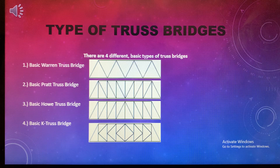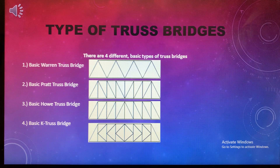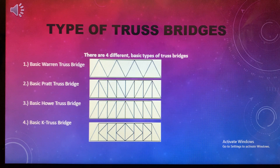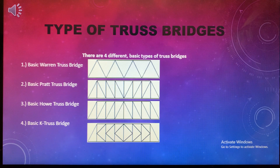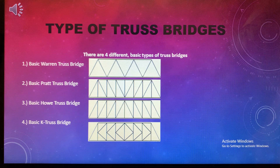Number one is a basic Warren truss bridge. As you can see in the picture, it looks like a W, and that's why you can remember it as a Warren bridge. Your second one is your basic Pratt truss bridge. Third one is the basic Howe truss bridge. The Pratt and the Howe are kind of flip-flopped in a way — we'll talk more about that. And your fourth one is your basic K-truss bridge, which you can tell is a K-truss because it has a K inside of it.